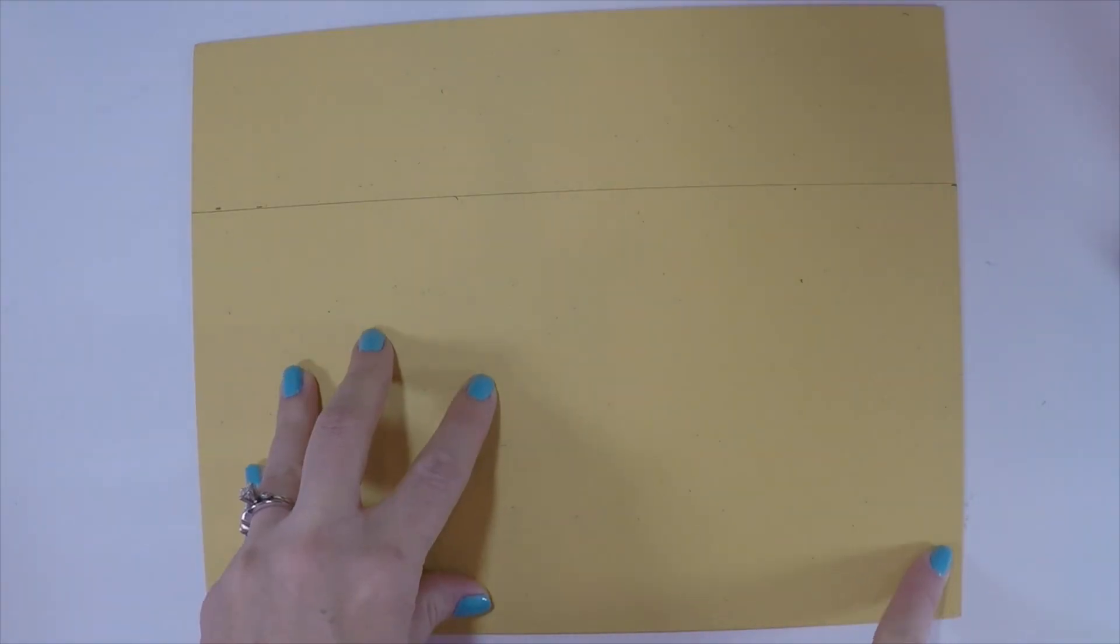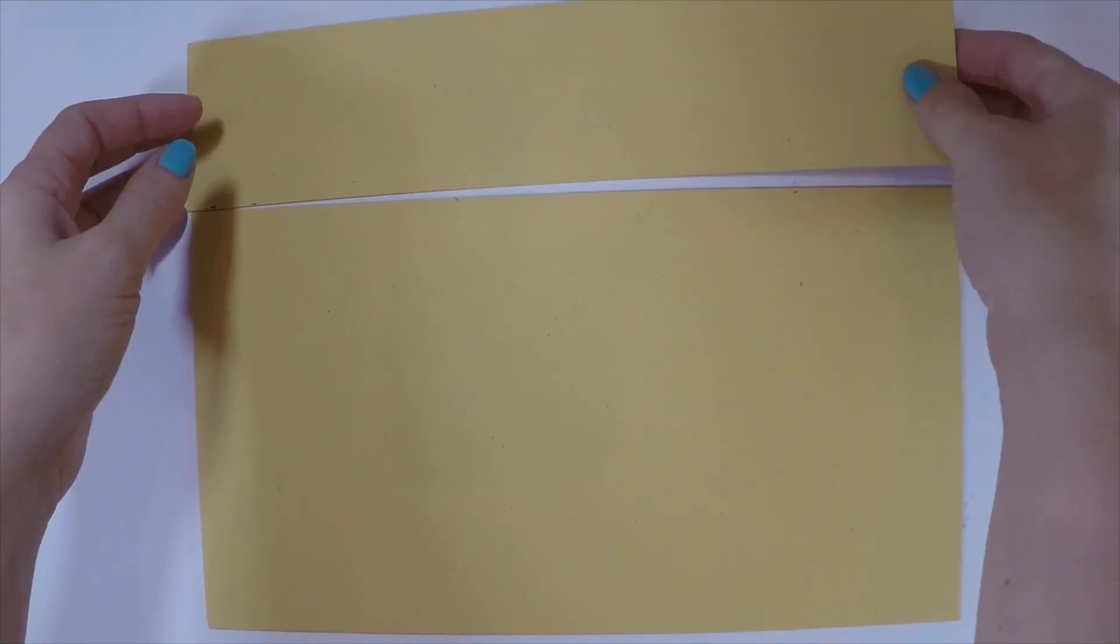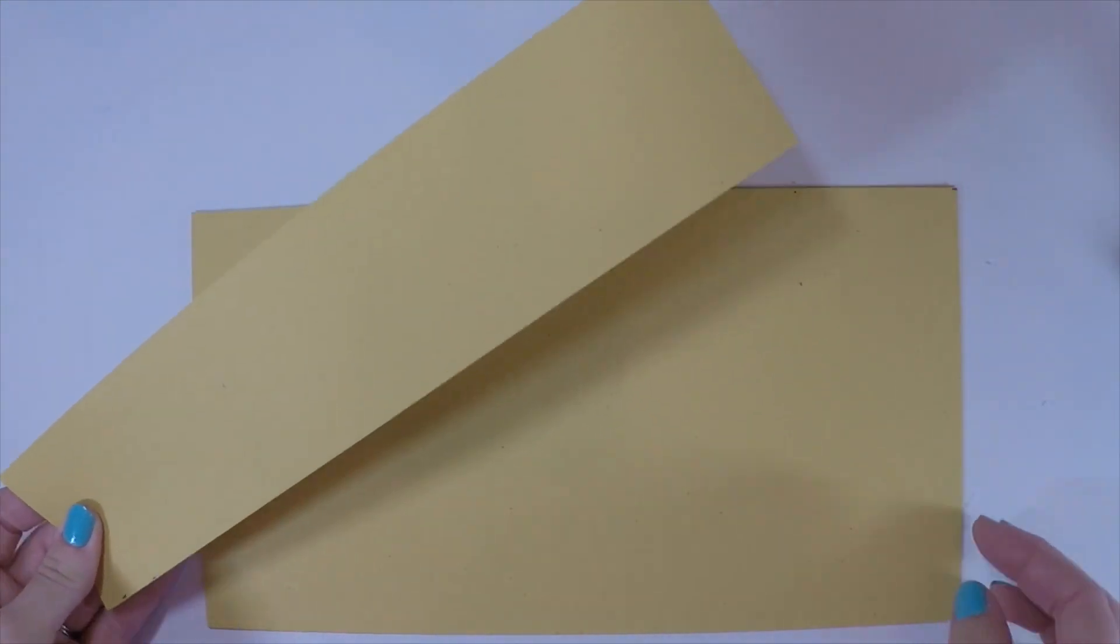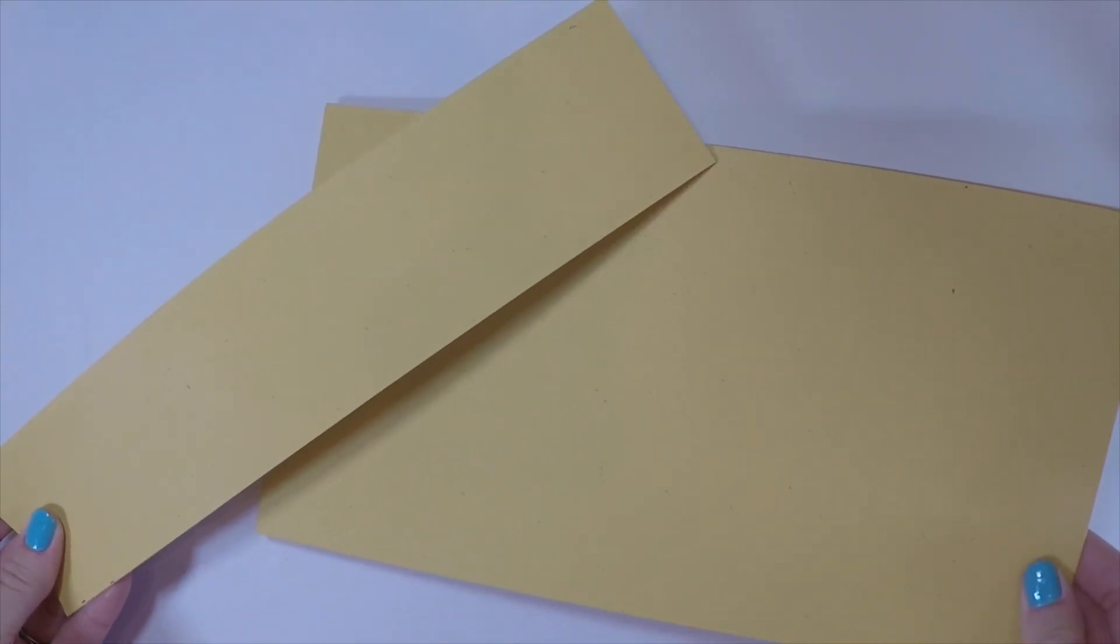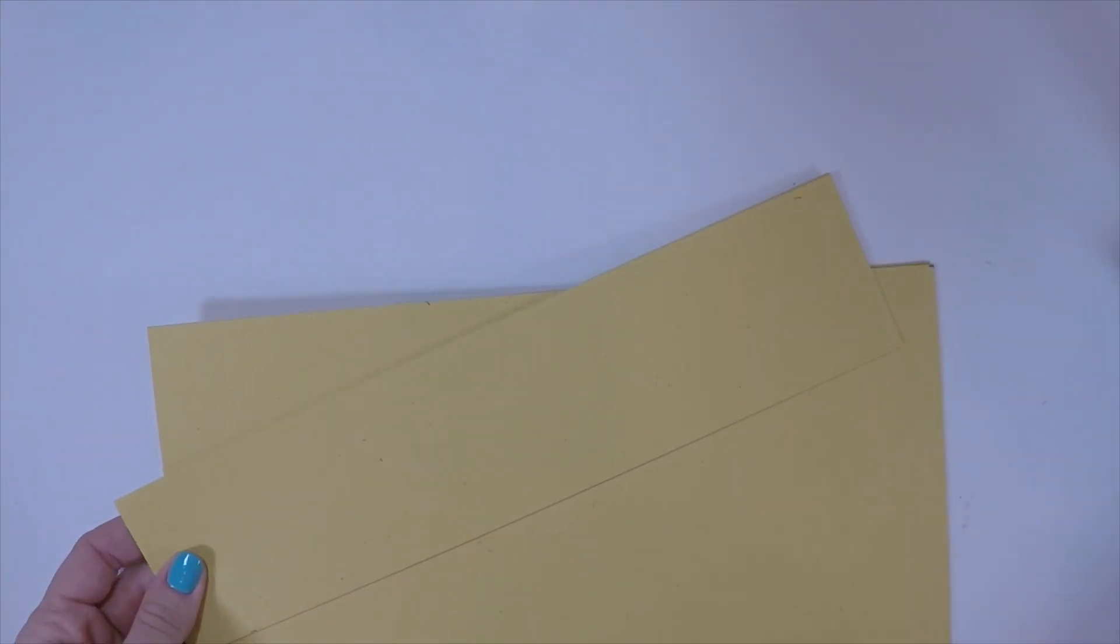Repeat this process for the second table piece. Now take your gold paper that is 8.5 by 11 and cut it at the 6 inch mark. That will give you a strip of 2.5 inches and a strip of 6 inches. These are going to be your table legs.